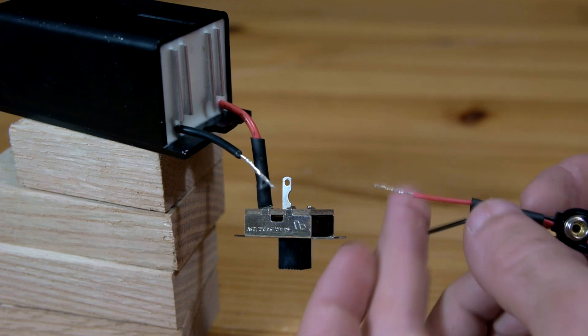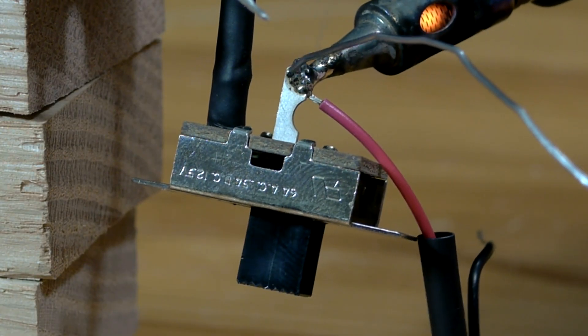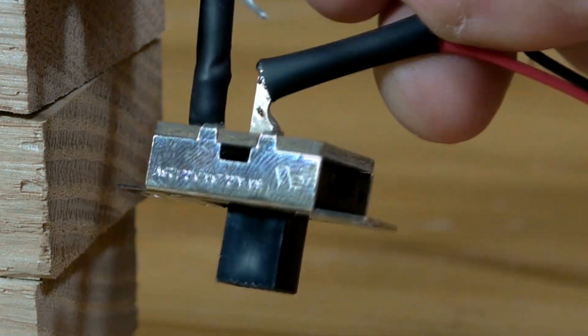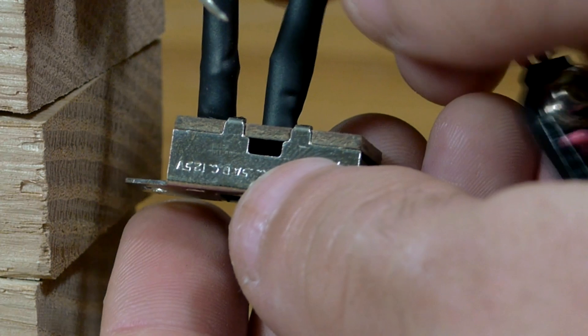With another section of heat shrink tubing over the red wire on the battery harness, it can be soldered onto the second terminal of the on-off switch. The insulating tubing is slid over both terminals and I can now move onto the black wires.